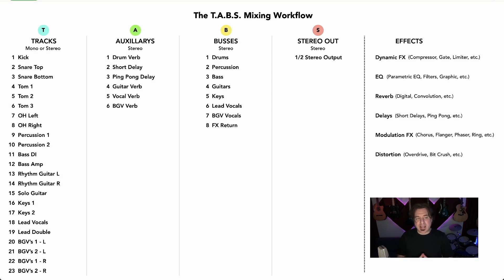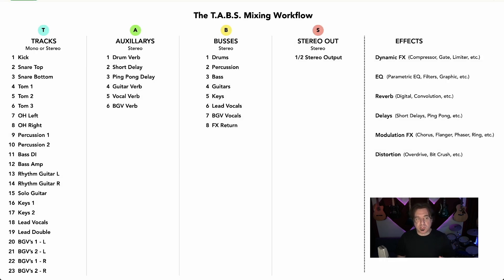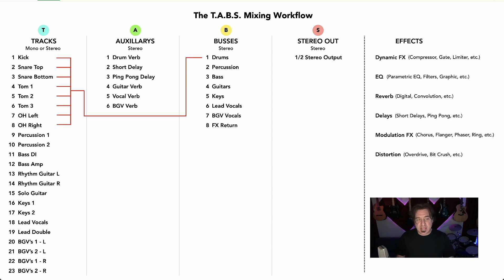Looking at the tracks, the first eight tracks are representative of what you would do to record a drum set: kick, snare top, snare bottom, tom-tom-tom, overhead left and right. What I'm going to do is get my blend on those tracks, compress the kick, do some things to make that drum set sound good, get my levels blended, and then take all of those drums and assign them to a drum bus. That way I can use the fader to mix the entire drum mix up and down.